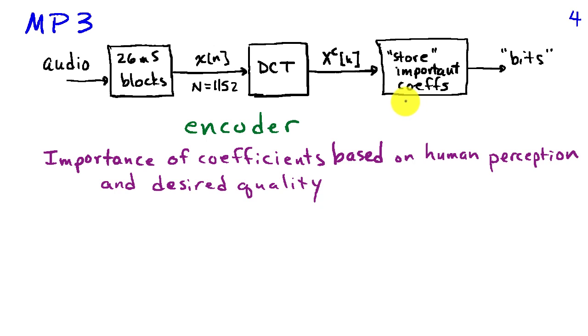Because we can generally discard many of the coefficients, this is a very efficient way of representing this block of signal. It turns out that when we say important, the MP3 algorithm decides how important a coefficient is based on human perception and the desired quality of the signal. There's some unique things about how humans hear audio that are taken advantage of to reduce the storage requirements. For example, if there are two sinusoids or tones that are very close together in frequency, typically the larger amplitude tone will mask or make the weaker amplitude tone impossible to hear. And so there's no need storing the information associated with that second tone because humans aren't going to perceive the difference.